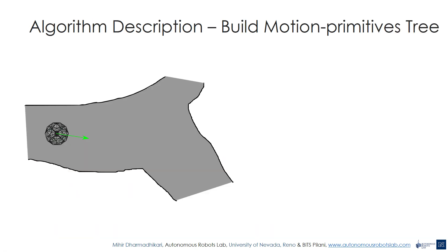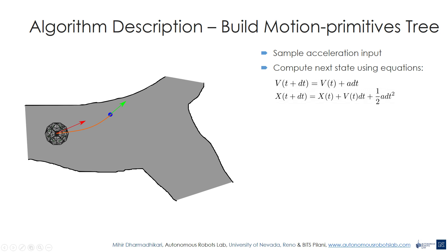We now present our algorithm in detail. In the first step of the algorithm, we build a tree of motion primitives by sampling linear acceleration as our control input. In the following scenario, an instance of an exploration mission is shown. The green arrow illustrates the current velocity direction of the robot. First, an acceleration is sampled from the acceleration space of the robot. Using this acceleration as the control input, the state of the robot after a certain time interval is calculated using the formula shown.